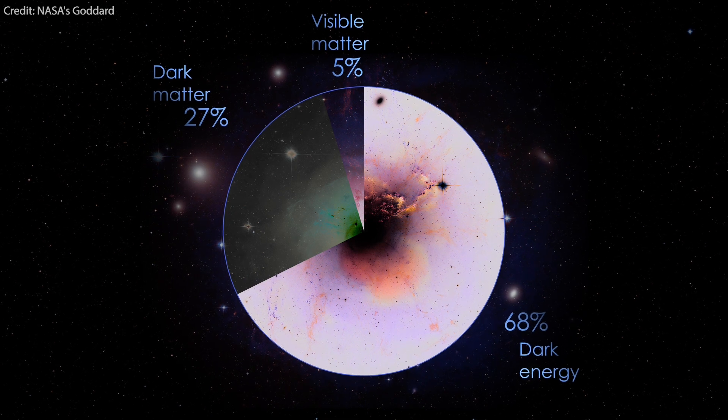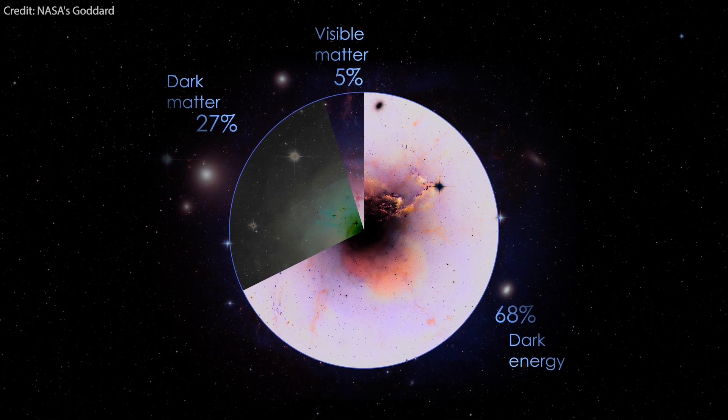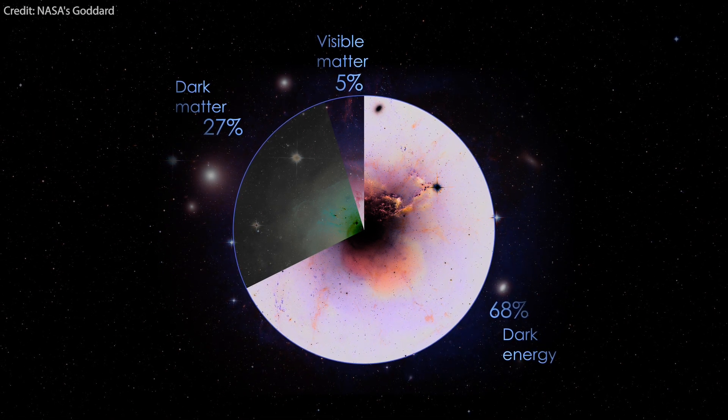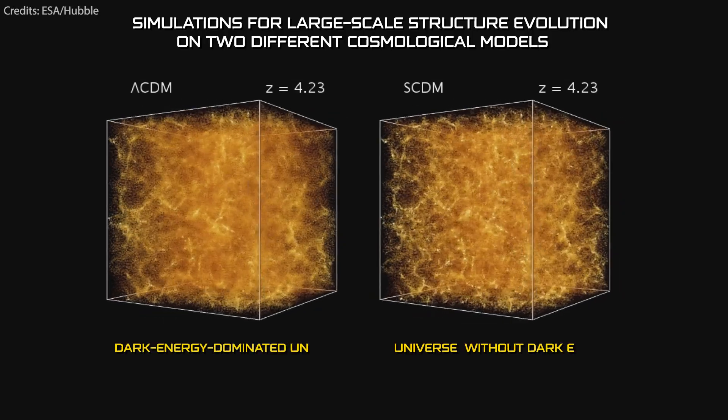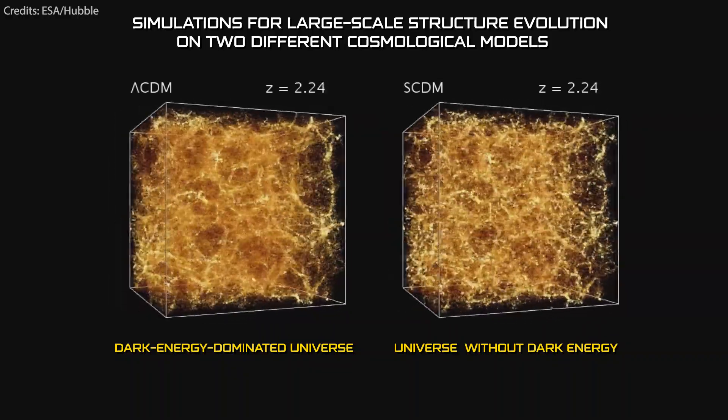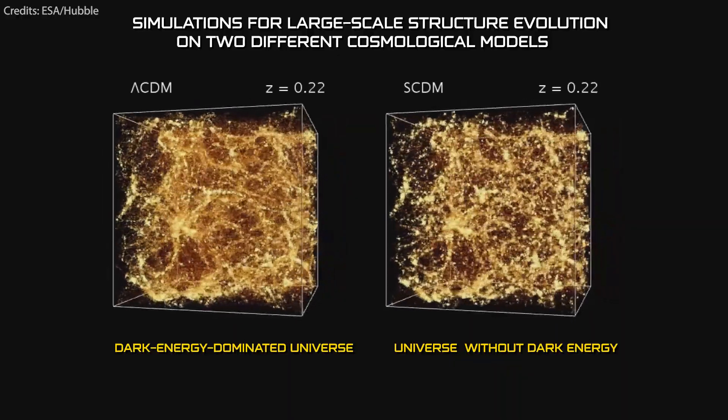The majority of the universe consists of dark energy, 68.3%, and dark matter, 26.8%, according to the most current models. While the existence of these elusive entities has yet to be experimentally proven, researchers are certain of their profound influence on galactic dynamics and cosmic evolution.